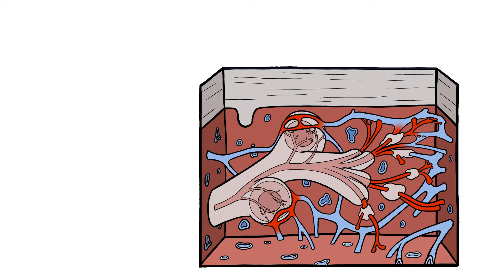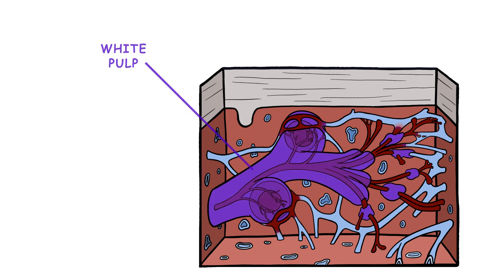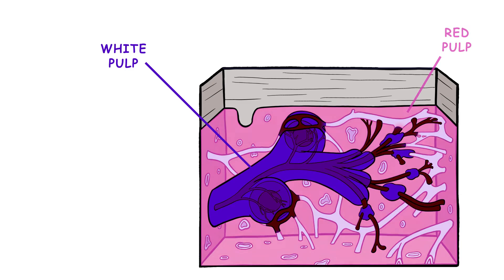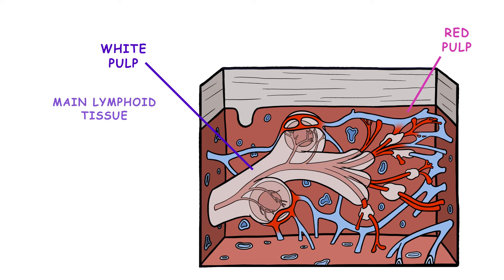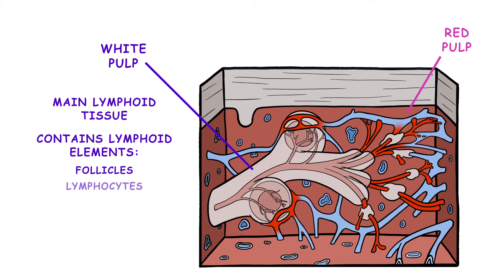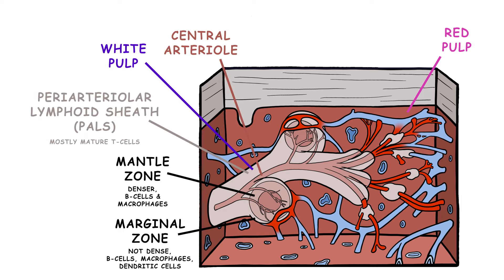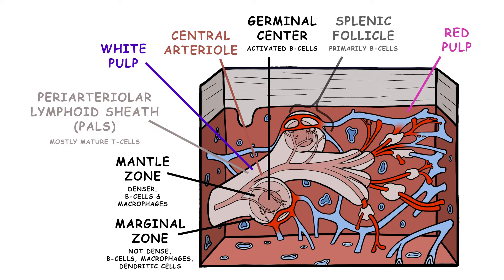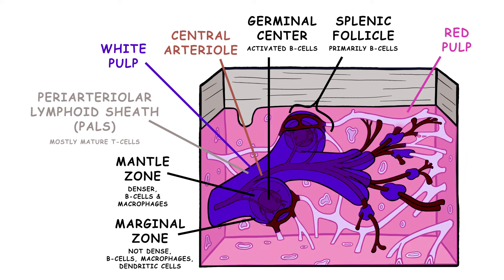The spleen has two tissue types: the white pulp and the red pulp. The white pulp is the main lymphoid tissue of the spleen and contains lymphoid elements, including follicles, lymphocytes, and plasma cells. Lymphocytes are produced in germinal centers, which are at the center of follicles. There are also phagocytic cells, known as macrophages, which reside in both the white and red pulp.